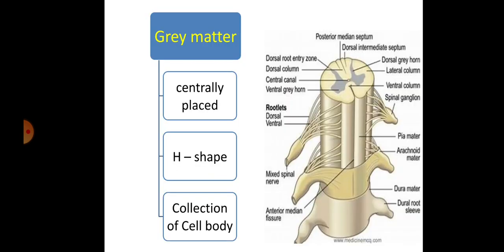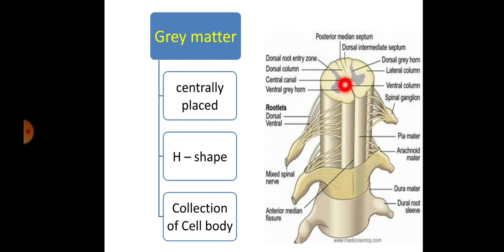In this chapter, I am going to cover grey matter in detail. Taking the cross section of the spinal cord, this is the centrally placed grey matter. It is placed in the centre and it is the H-shape, or you can say butterfly shape. This grey matter is nothing but the collection of the cell body of the neuron. Along with the cell body of the neuron, neuroglia cells and blood vessels are also present in the grey matter.